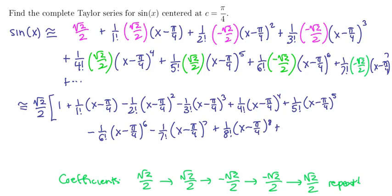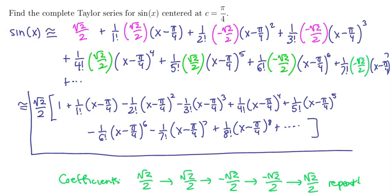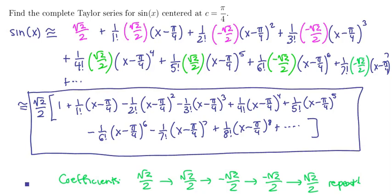And then this pattern of plus, plus, minus, minus repeats forever. So here is the Taylor series. Remember, what we're looking for is not necessarily a closed formula, but just a pattern that anybody else could repeat and generate as many Taylor polynomials as they want. This plus, plus, minus, minus pattern is pretty evident in what we've written.